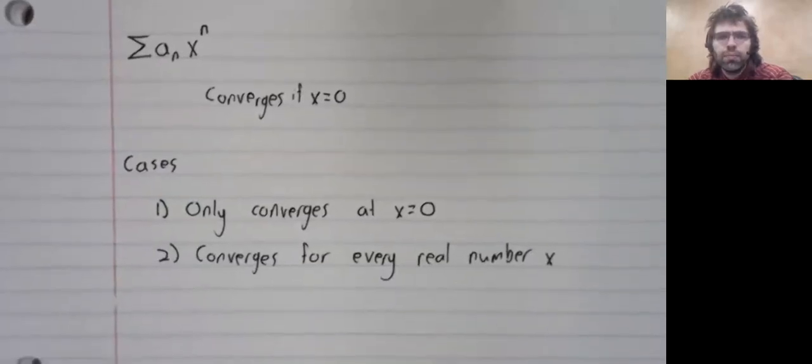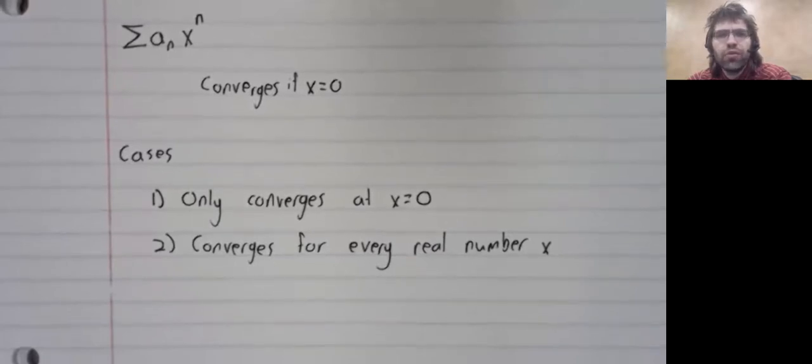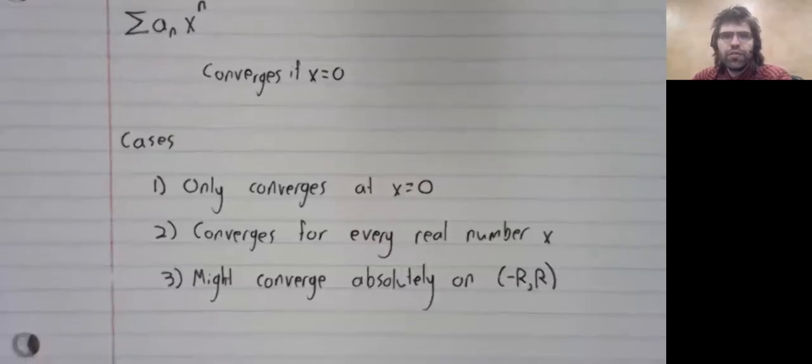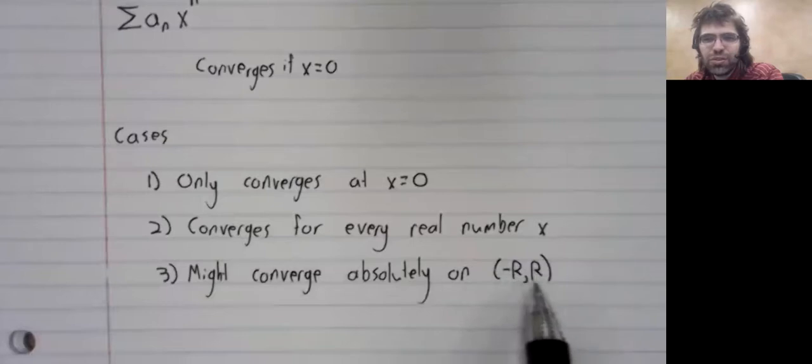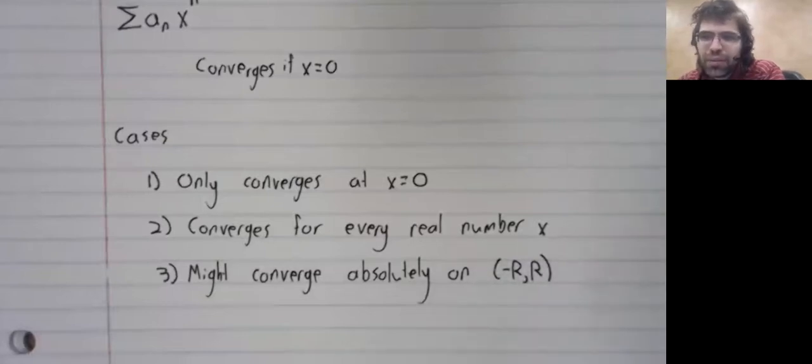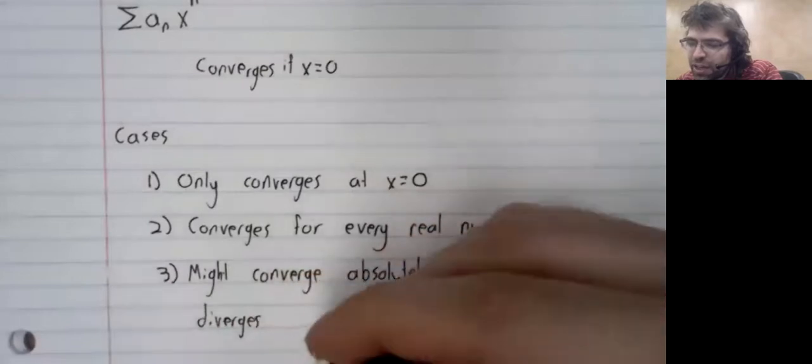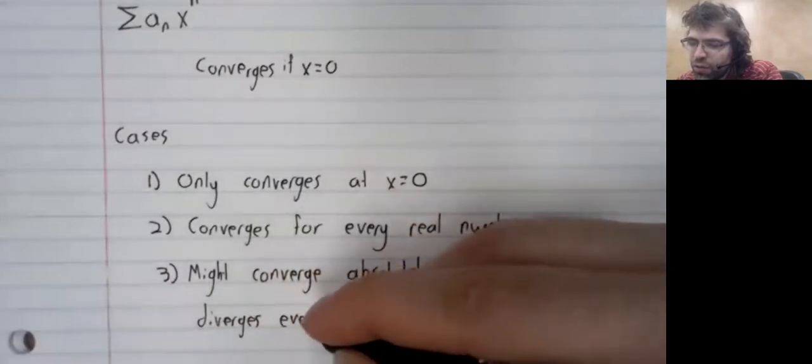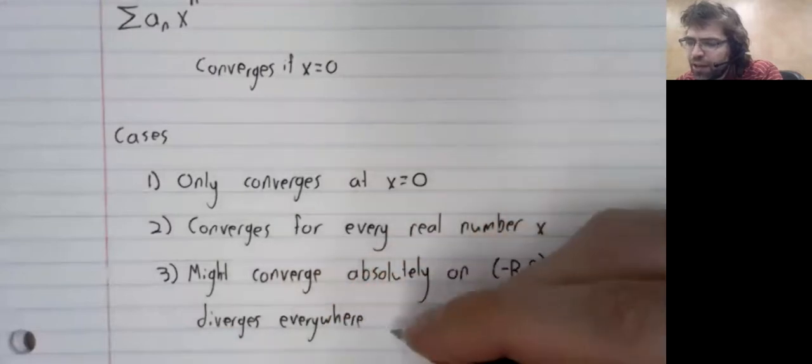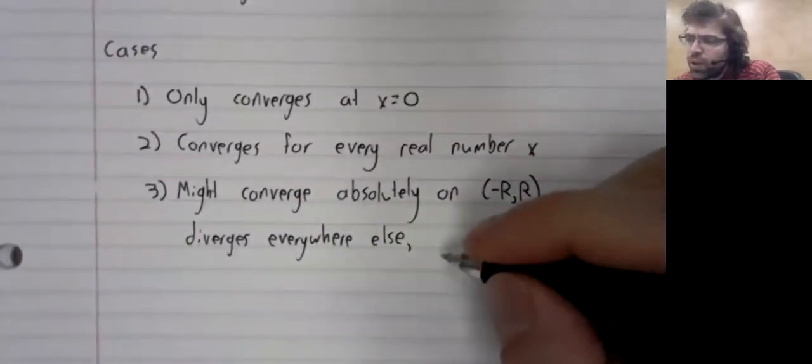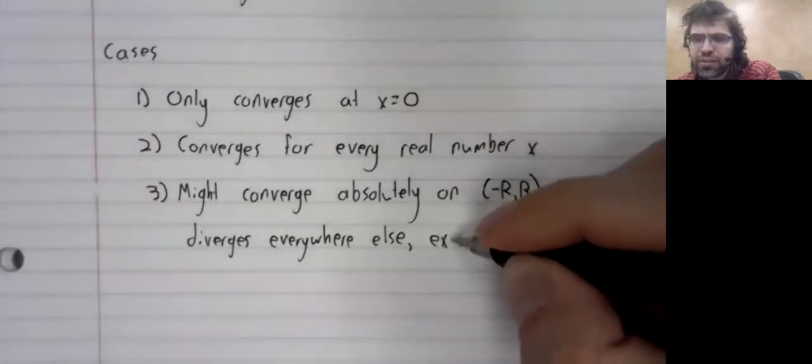Third, it might converge and converge absolutely on an interval centered at zero. And conversely, if it converges absolutely on this interval, what I'm trying to imply is that it converges absolutely on an interval and diverges everywhere else with two possible exceptions.